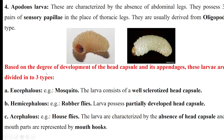Coming to another type of classification — based on the degree of development of the head capsule. First type is eucephalous. Eucephalous means a well-developed or well-sclerotized head capsule — for example, in case of mosquito larvae. Then coming to the hemicephalous — 'hemi' means half, 'cephalous' means head capsule. So in this type of larvae, the head capsule is partially developed — for example, robber flies. And third is acephalous — 'a' means absent, 'cephalous' means head capsule — so here the head capsule is completely absent.